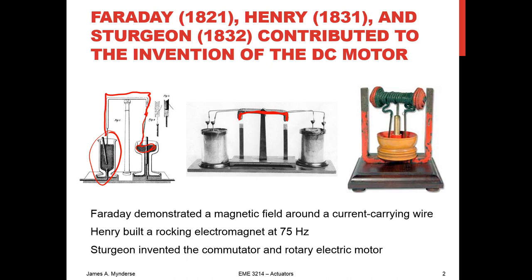That's still not particularly useful — what we really want is rotary motion. Sturgeon in 1832 developed a commutator. The commutator acts like the rocking motion: it switches the direction of the current back and forth in the coil. That switching causes the magnetic field to change relative to the permanent magnets, which generates a torque on the current carrying wire, causing it to rotate. That is our first rotary electric motor in 1832.